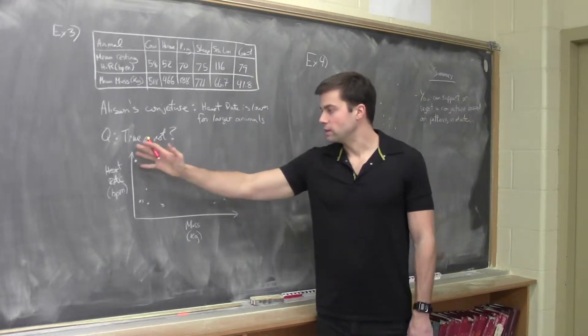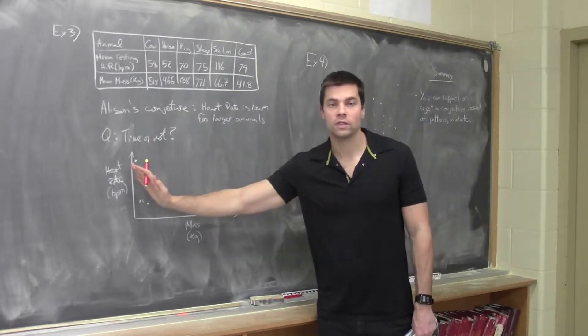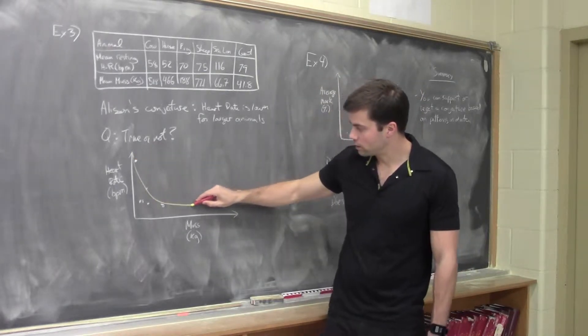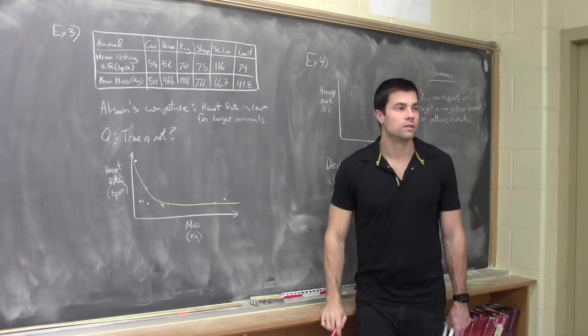All right, so we get this sort of data that's really high at first, and then kind of lowers. So we're going to want to draw some sort of curve of best fit here, like that, okay?